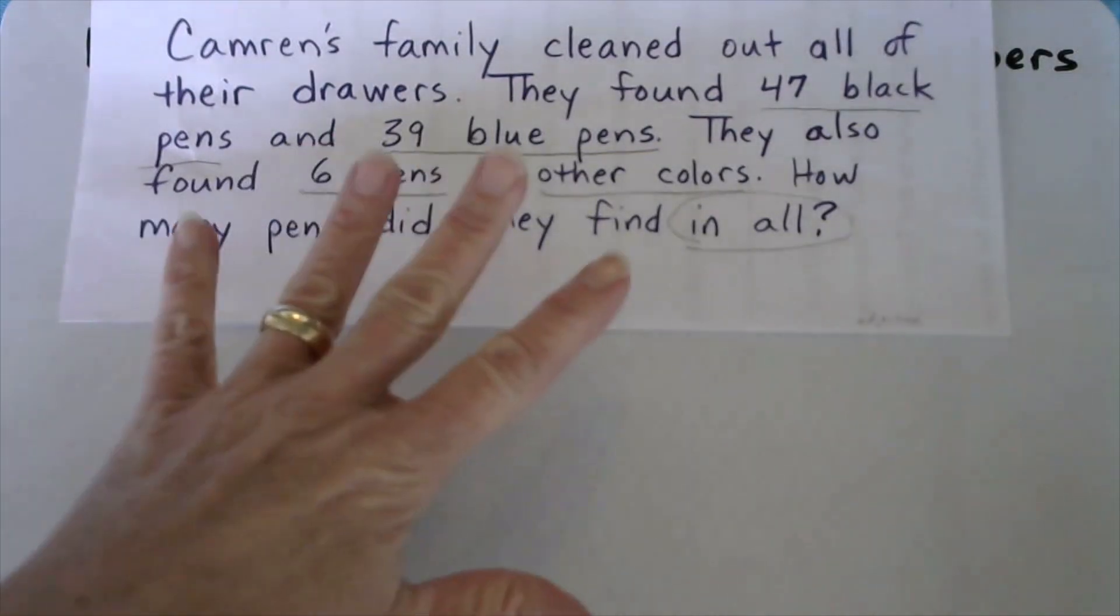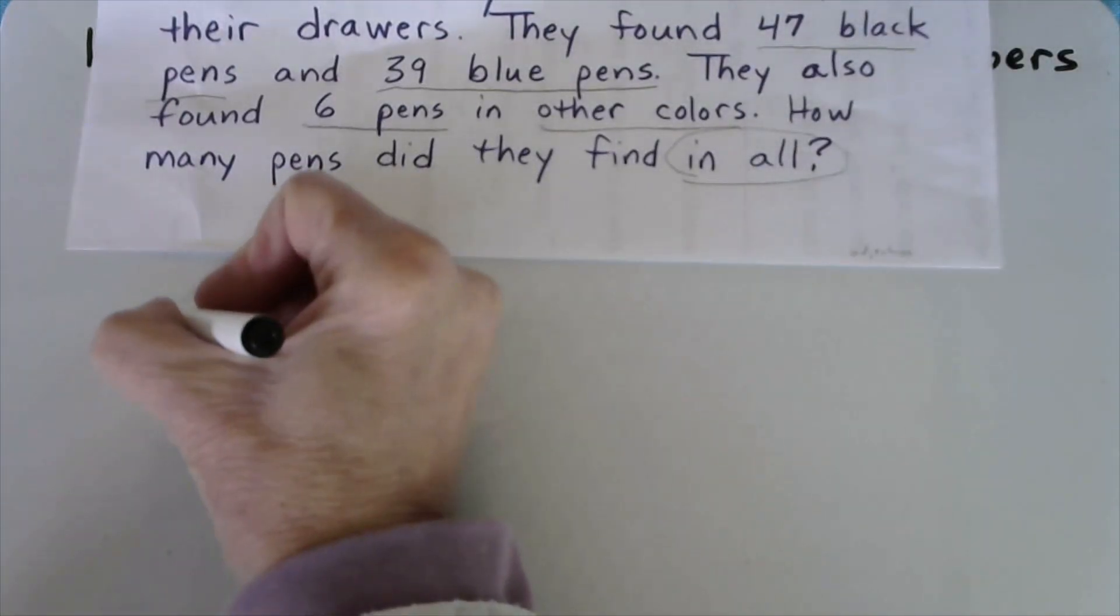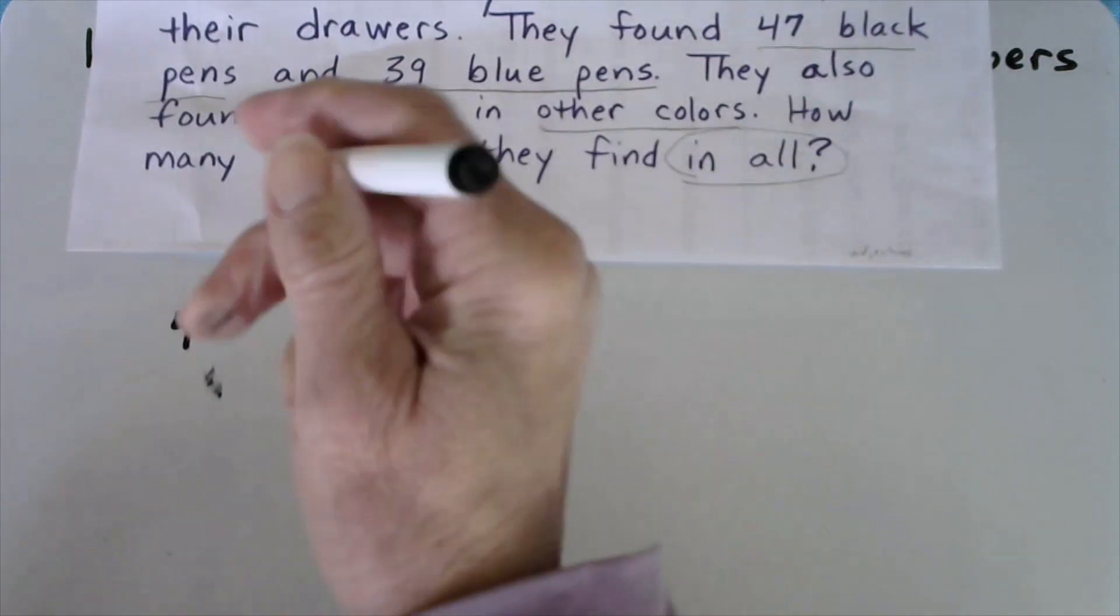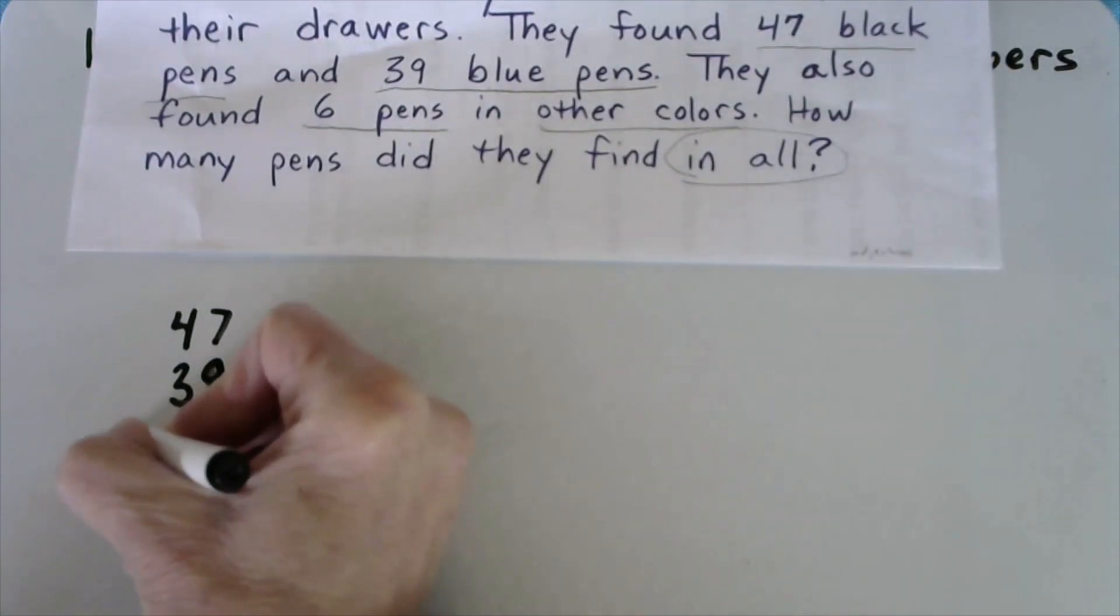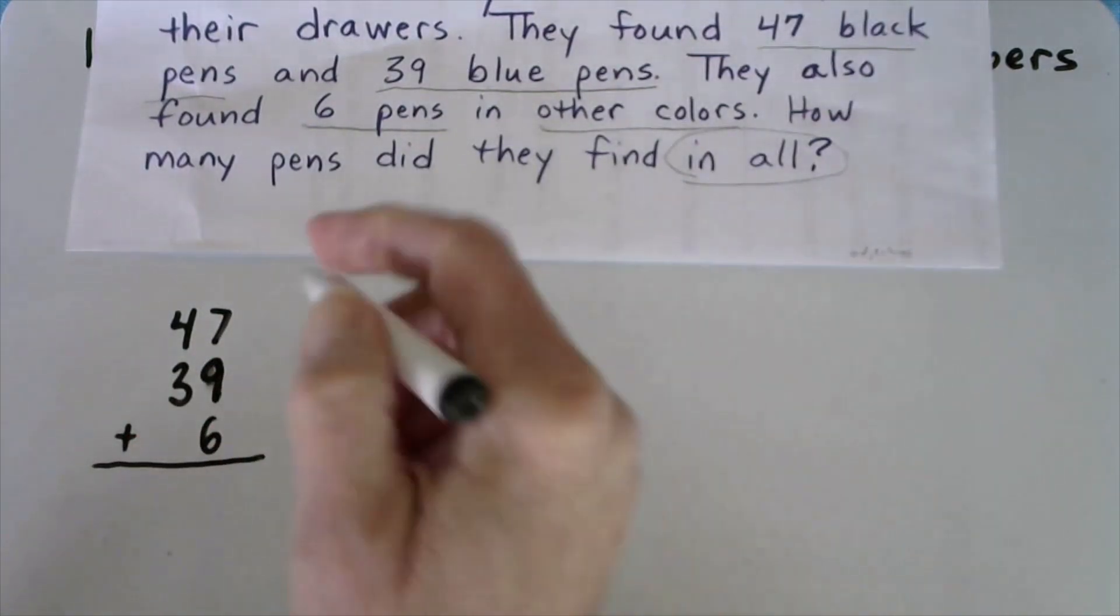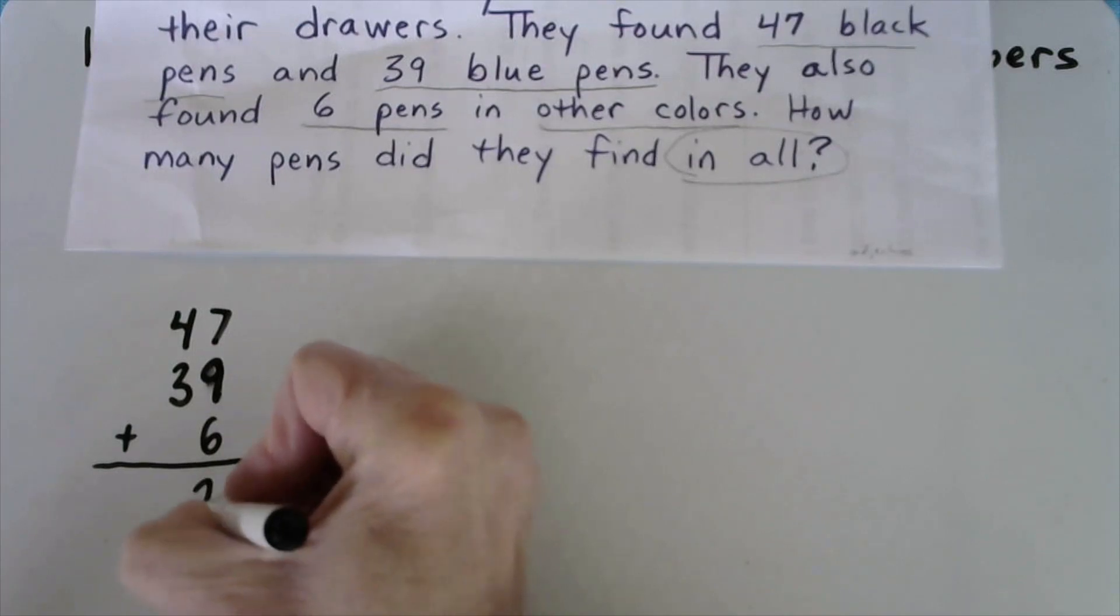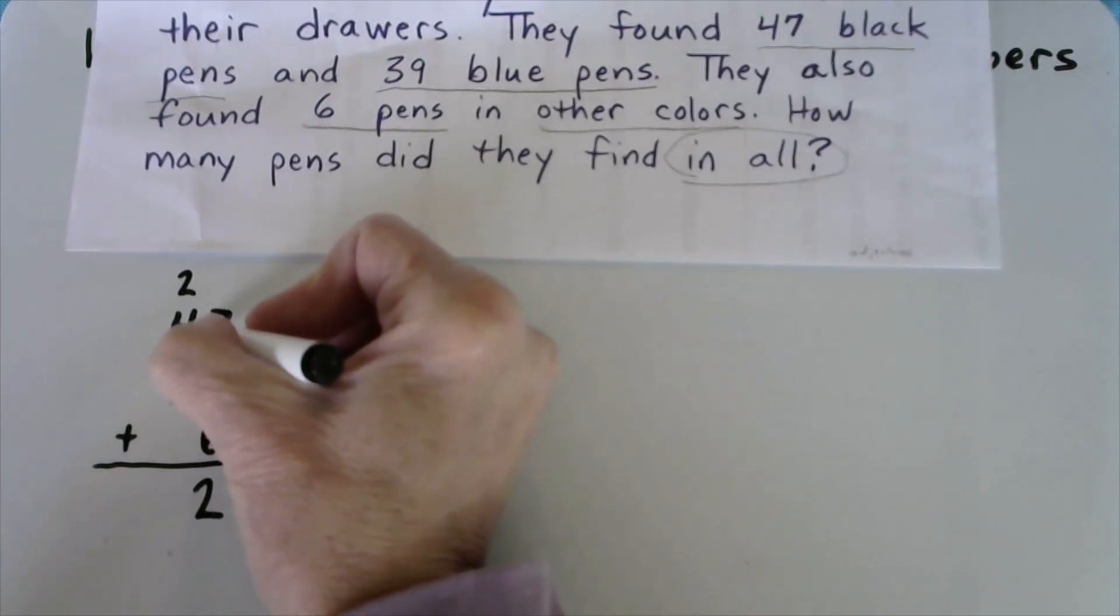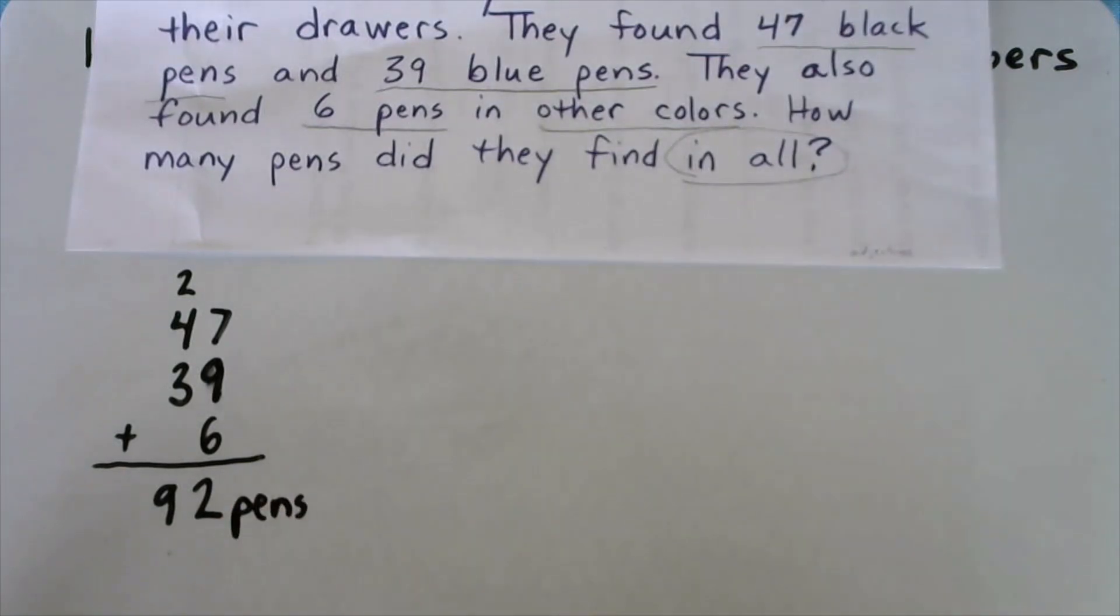So many of you, now that we've learned the algorithm, which is a memorized procedure and series of steps, you may have decided to solve with the algorithm. So there's the 47 black pens, the 39 blue pens, and the 6 pens of other colors, and the operation was addition. So we add 7 plus 9, we get 16, plus 6 more would be 22. We can only put two ones in the ones column. 20 plus 40 is 60, 60 plus 30 is 92. And you always, always, always write a unit, 92 pens.